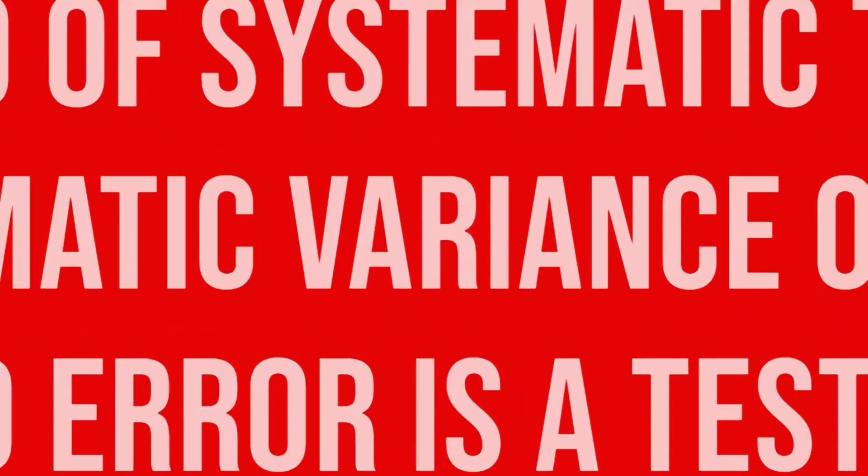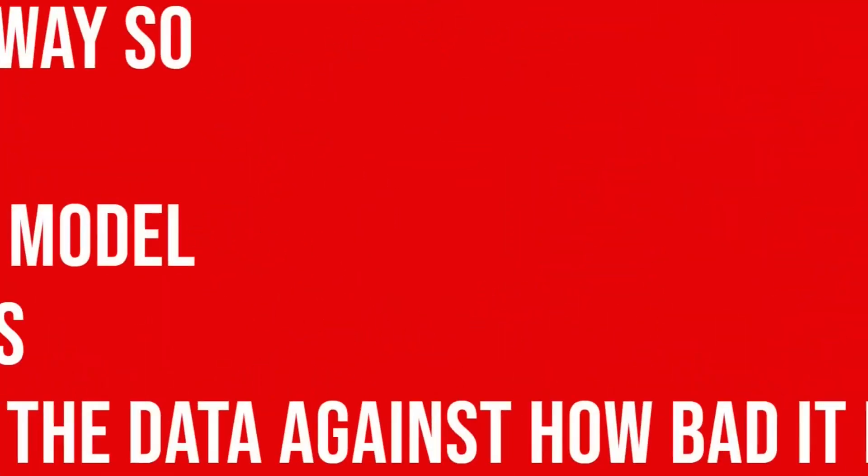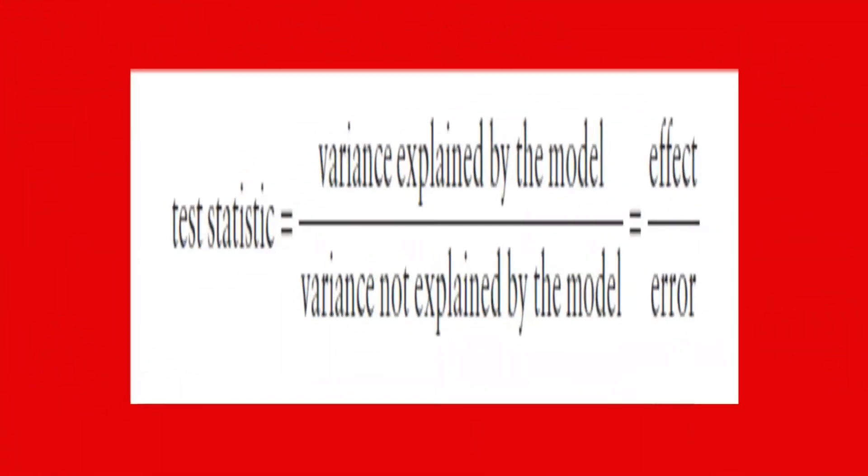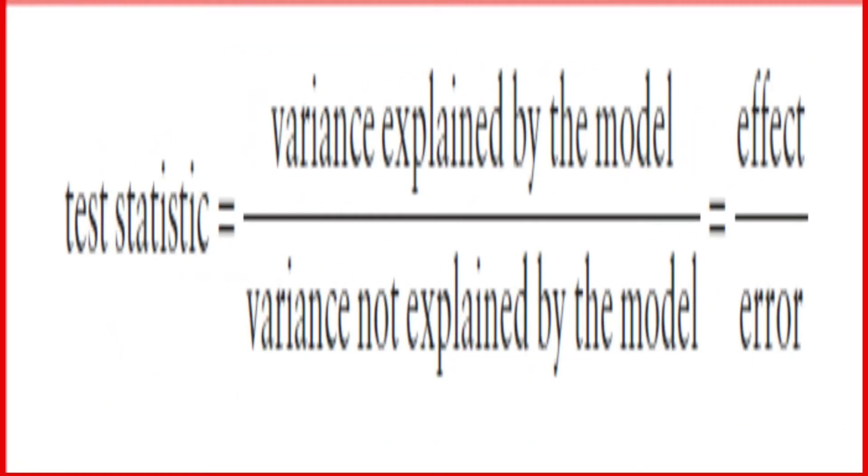The simplest way to understand is how good the model is when we explain the data against how bad the model is, in other words, the error term. Now if you look at this diagram or formula, you can understand it is just the variation of the model, which is effect, divided by the unexplained variation, which is error.